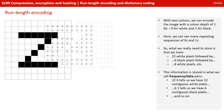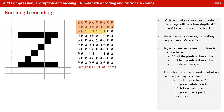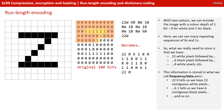With two colours, we can encode the image with a colour depth of 1 bit: 0 for white and 1 for black. Here we can see the repeating sequence of 0s and 1s. What we really need to store is that we've got 22 white pixels followed by 6 black pixels, followed by 8 white pixels, and so on and so forth. This information is stored in what we call frequency-data pairs. A 22-0 tells us we have 22 contiguous white pixels.